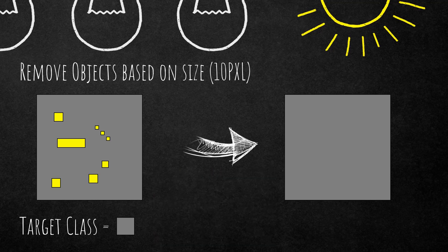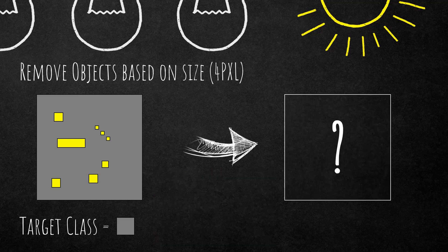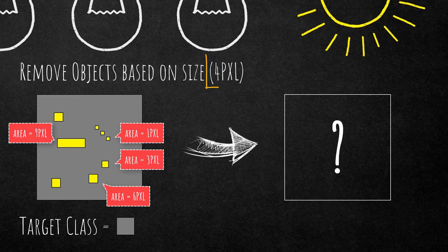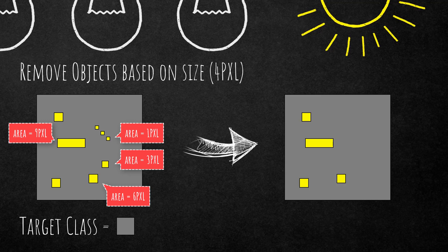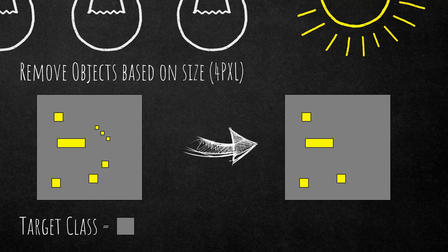Now let's change the size threshold to 4 pixels. The result is that the larger image objects classified as yellow are still there, because they're larger than 4 pixels and are not considered by the Remove Objects algorithm.